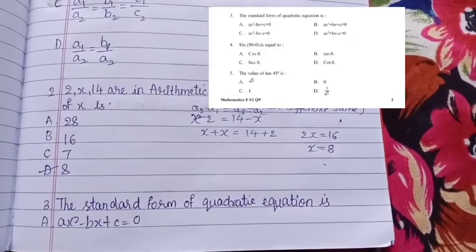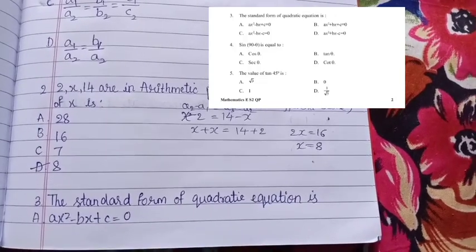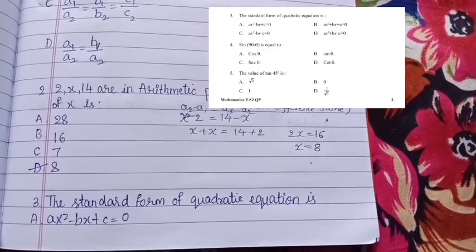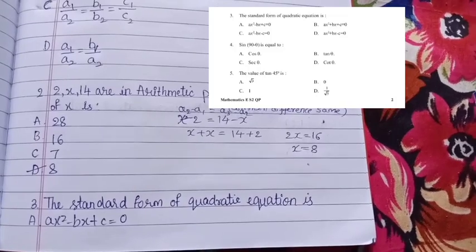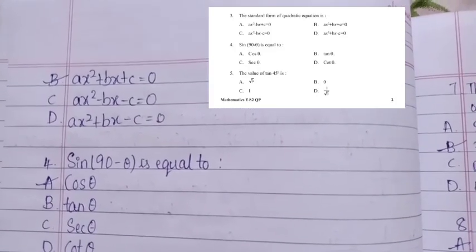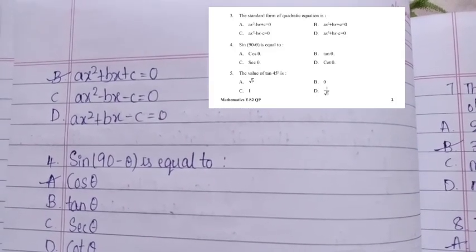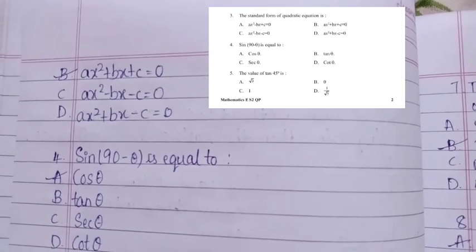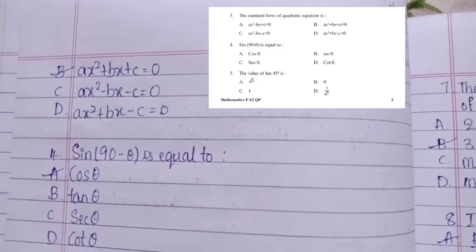The standard form of quadratic equation is — the right answer is Ax² + Bx + C = 0. This is the standard form.